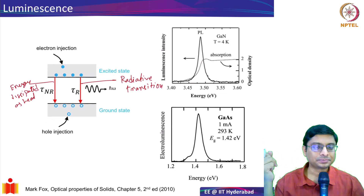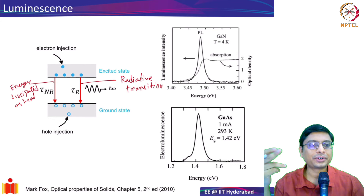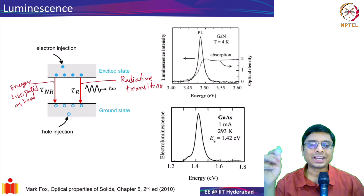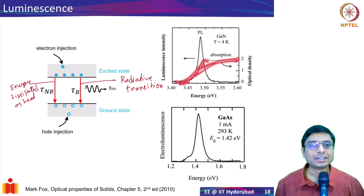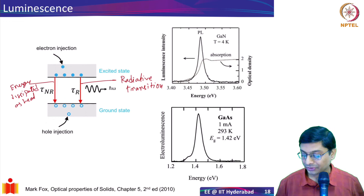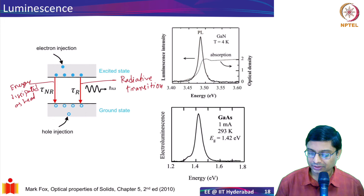For silicon, the non-radiative mechanism is dominant, whereas for direct-bandgap materials like GaAs or InP the radiative transition is dominant. That is why LEDs and lasers use direct-bandgap semiconductors. When you pump a material, the electrons relax to the band edge and emit a photon at the band gap energy. If the electrons and holes are injected by light, we call the emission photoluminescence (PL).